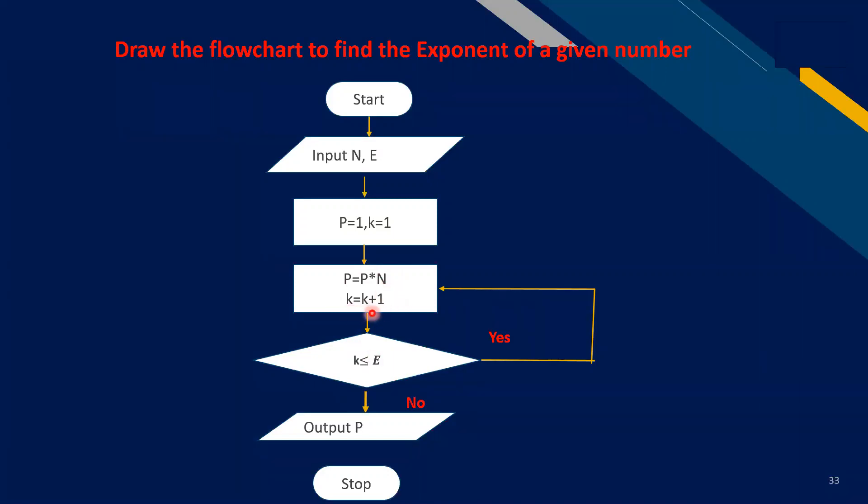Increment the k. Now 2 plus 1 equals 3. So k is less than 3 is less than 2? No, not equal. So terminate the loop and print the output. Output is here 25 and then stop.